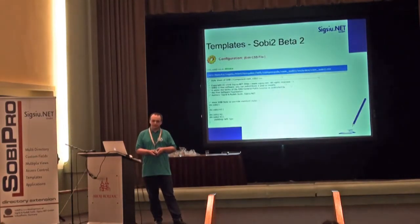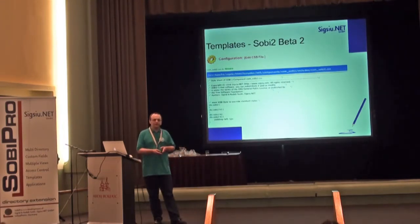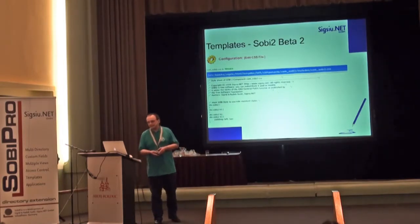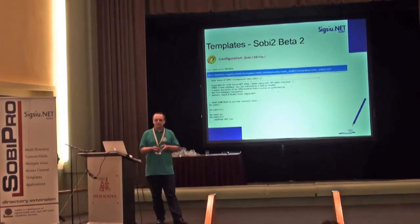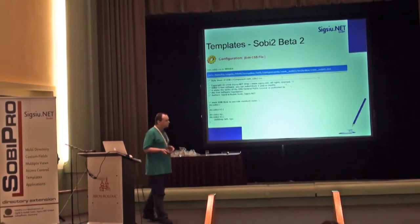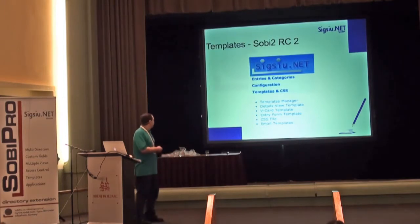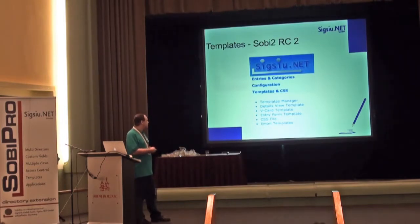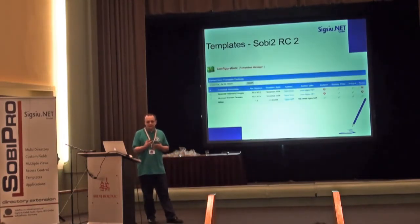In Sobi 1, there was not a really easy way to style the output of the component. Therefore, in Sobi 2 we implemented a CSS editor. But people kept asking, and it wasn't enough — rightfully so. So we started to implement different templates in Sobi 2: first the details view template, then the category field template, then the entry form template, and finally a kind of template package manager.